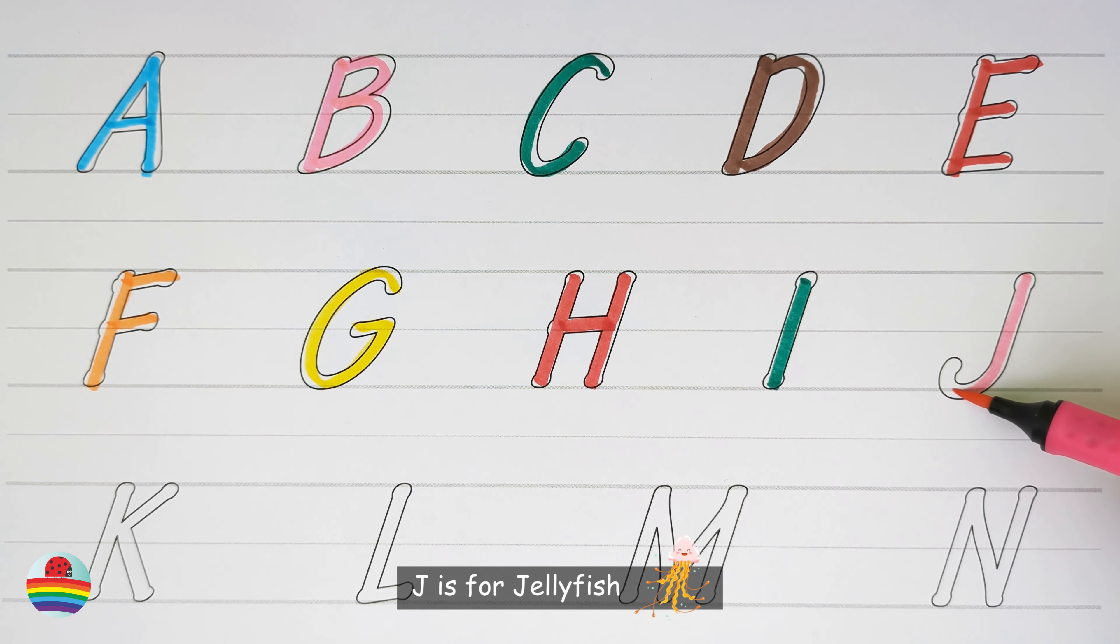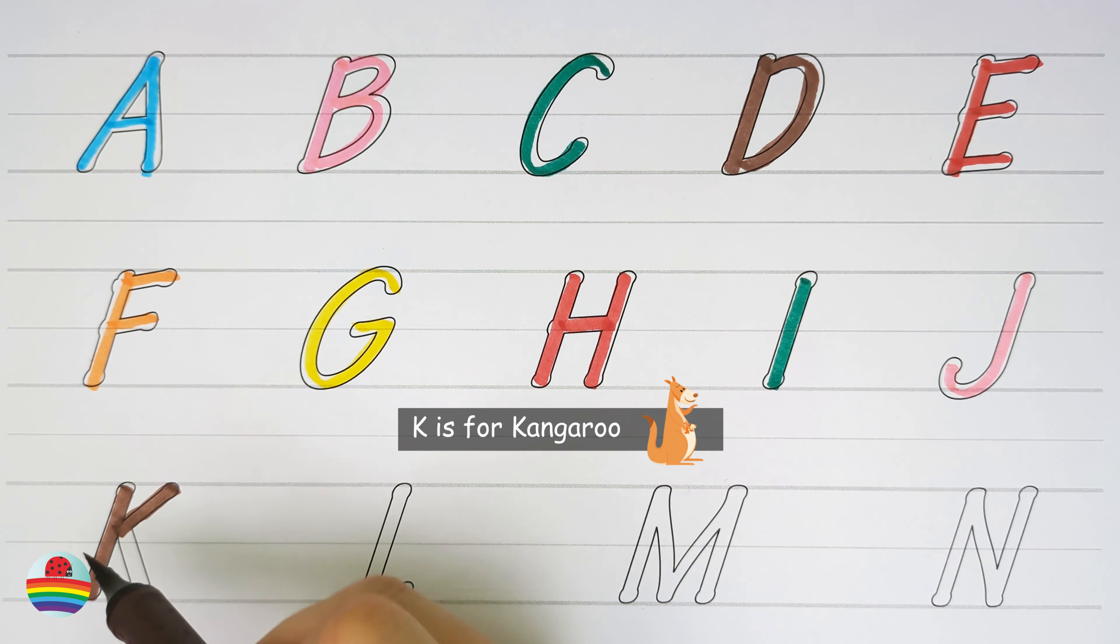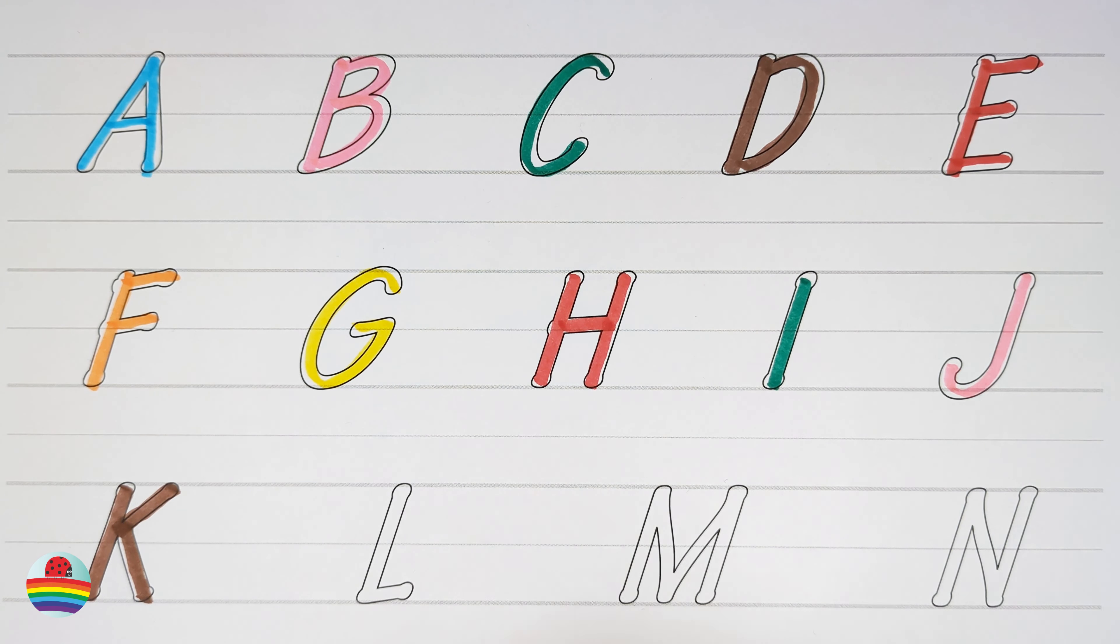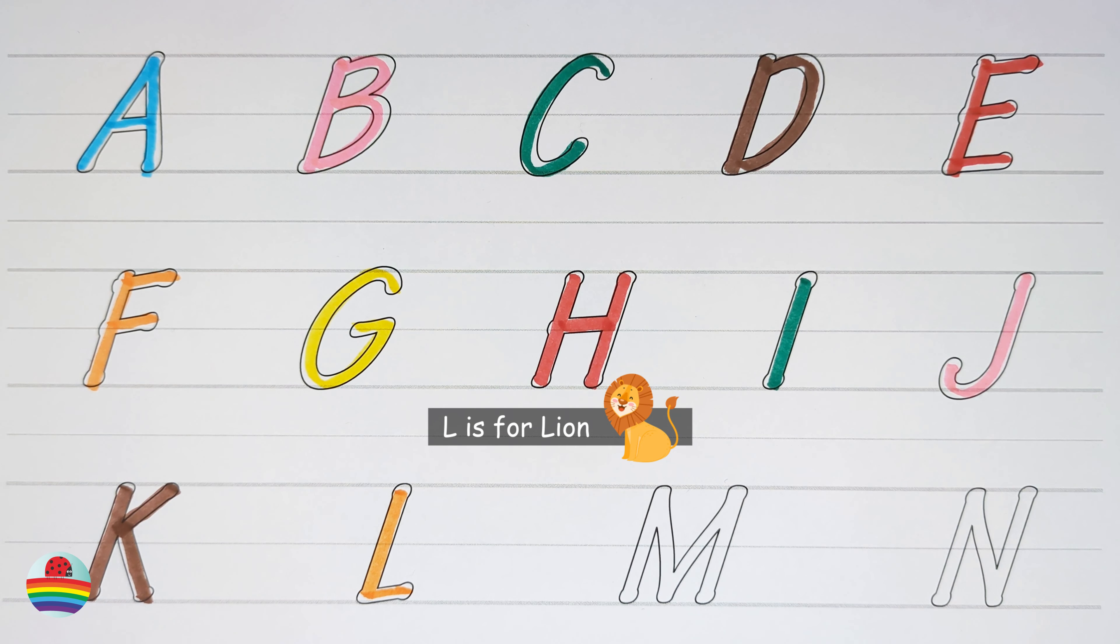J. J is for Jellyfish. K. K is for Kangaroo. L. L is for Lion.